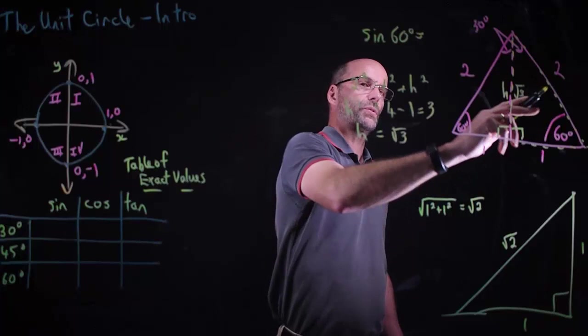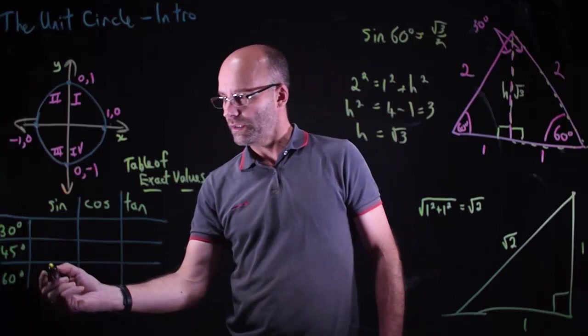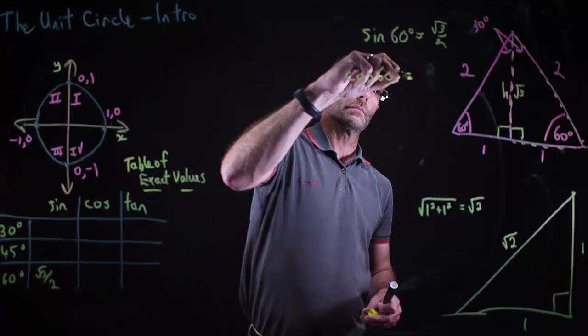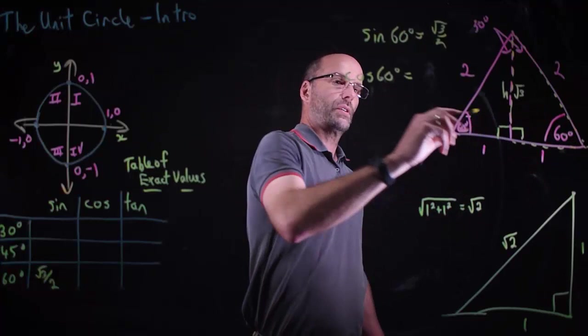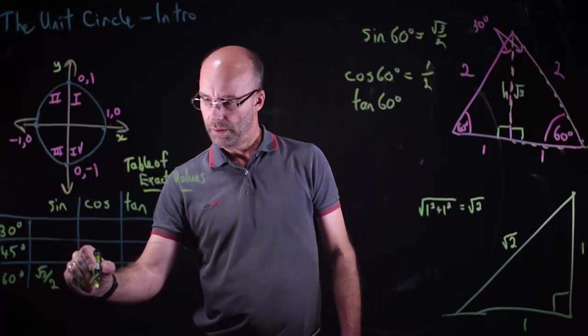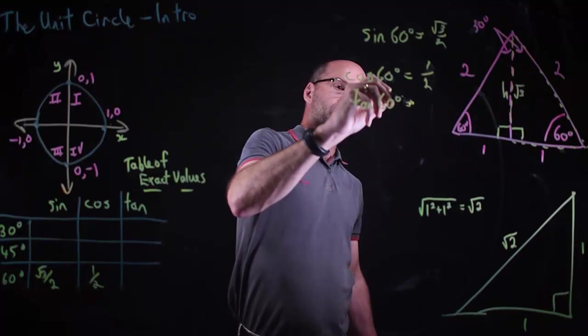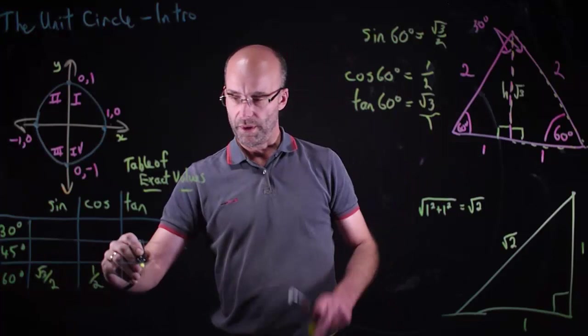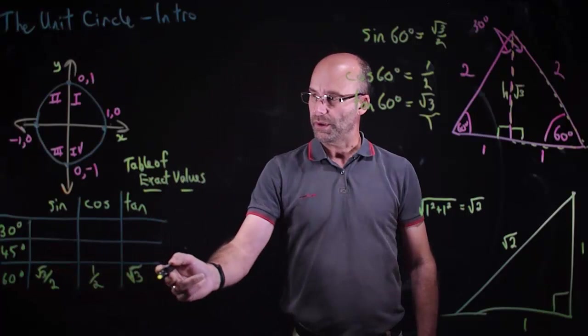Getting back to sine 60°: it's opposite over hypotenuse, which is √3 over 2. So sin 60° = √3/2. Cosine 60° is adjacent over hypotenuse, which is 1/2. And tan 60° is opposite over adjacent, which is √3 over 1, which is just √3.